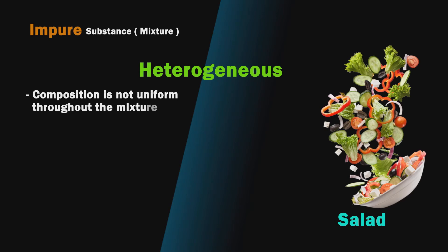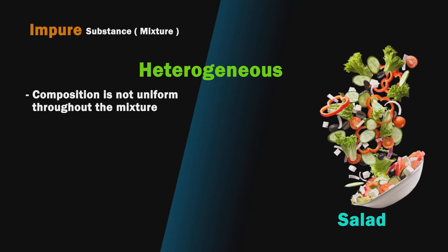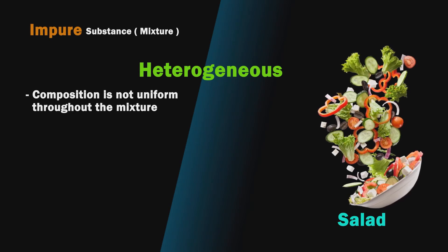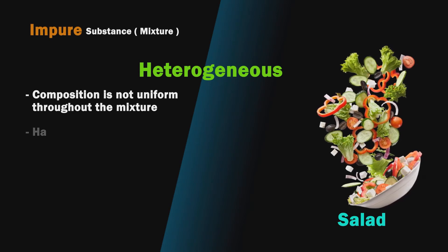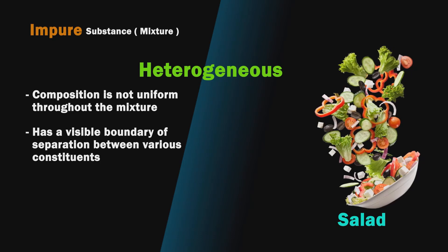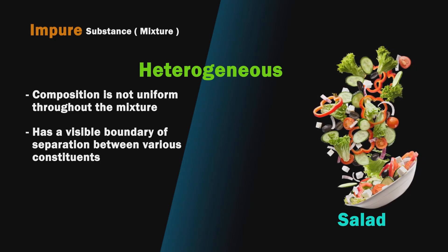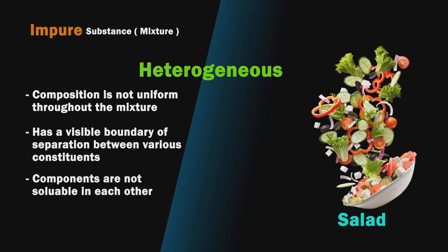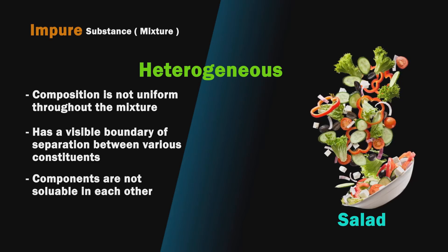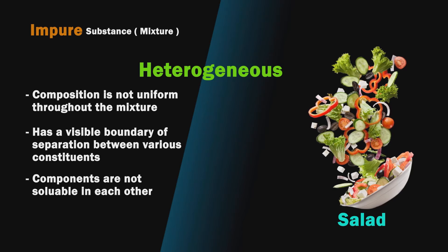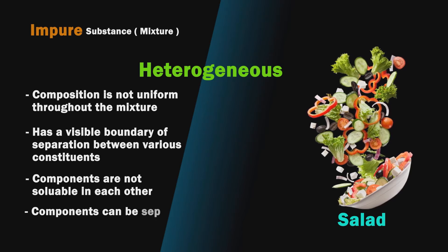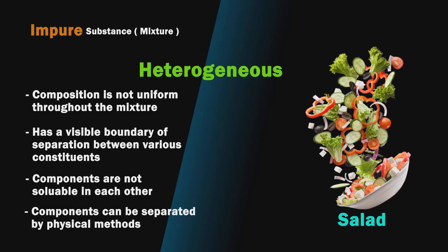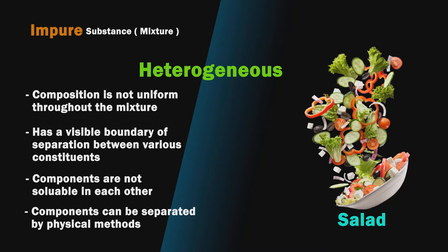Properties of a heterogeneous mixture: First, composition is not uniform throughout the mixture. Second, it has a visible boundary of separation between various components. Third, components are not soluble in each other. Fourth, components can be separated by physical methods.